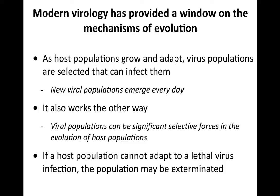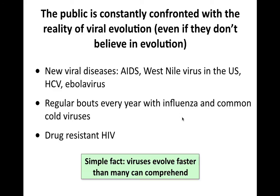Virus populations are always selected to be able to infect host populations. There are new viral populations emerging every day in the ocean — remember, there are 10 to the 21st lytic infections per second. Absolutely selection going on at the second time scale. Virus populations are also selection forces in the evolution of host populations. If the host can't adapt to a lethal virus infection, the population is going to be exterminated. This is the so-called arms race: the virus changes to overcome a host defense, the host evolves in turn, and it just goes back and forth. The public must understand evolution because viruses exemplify it.